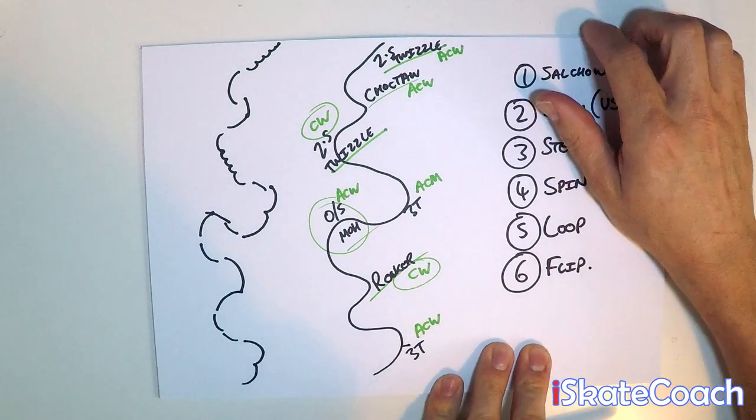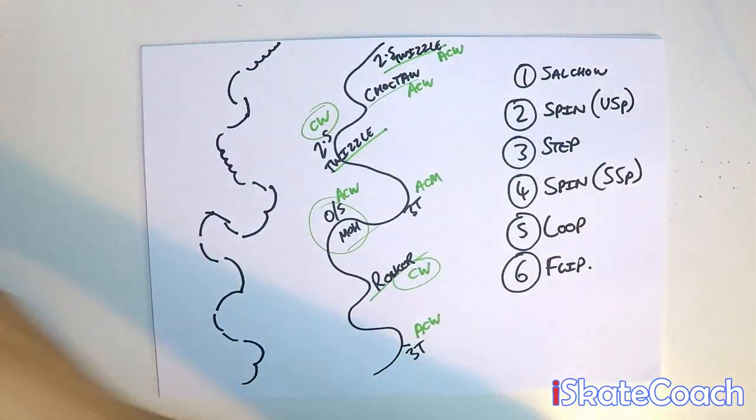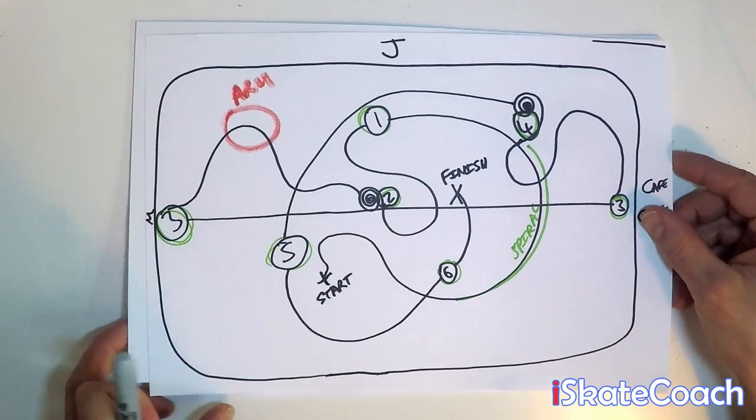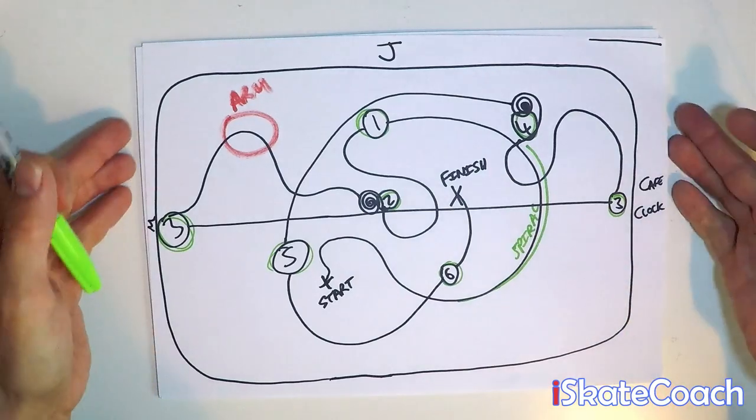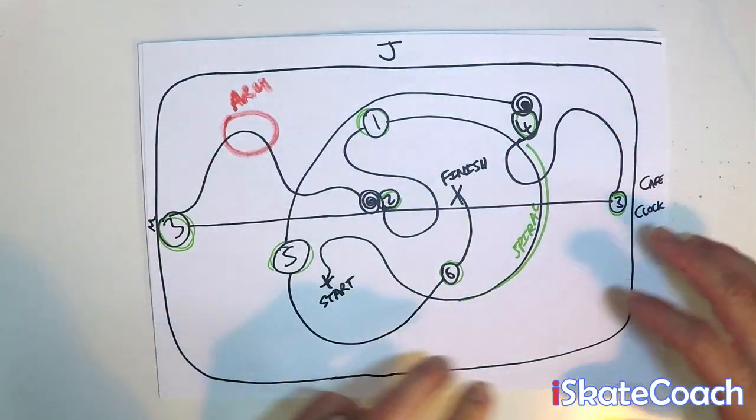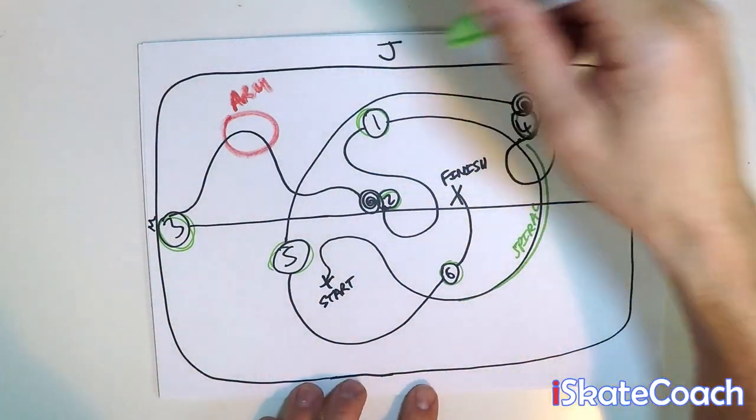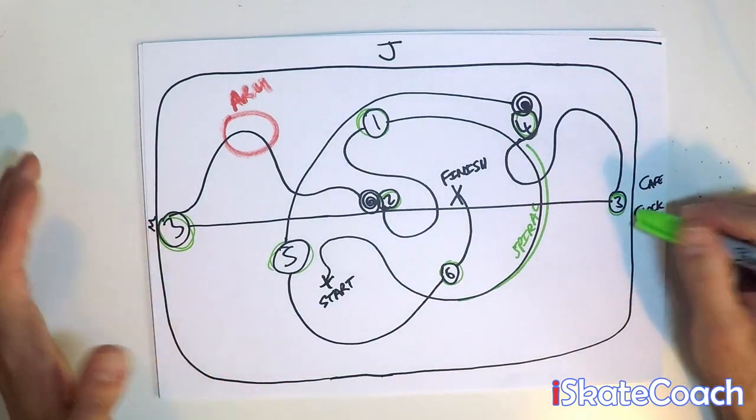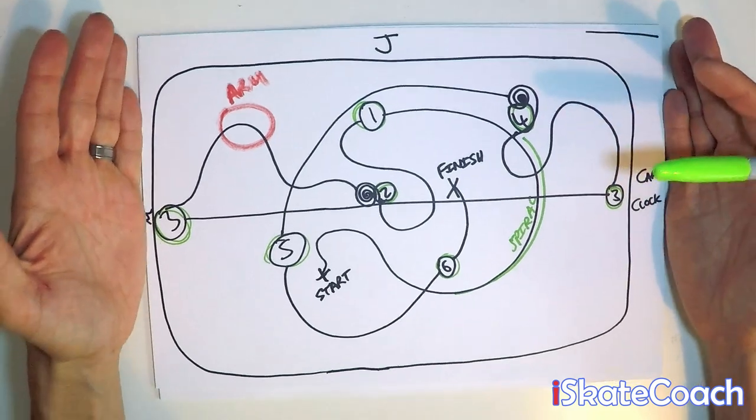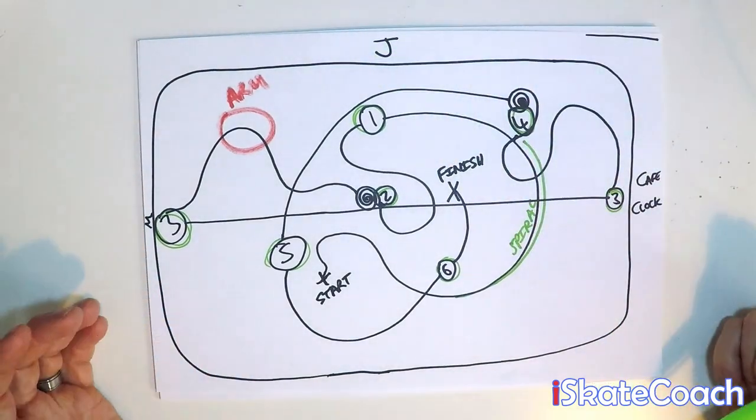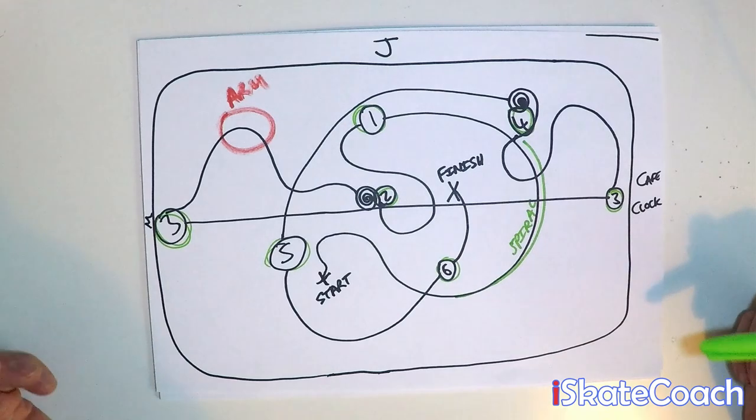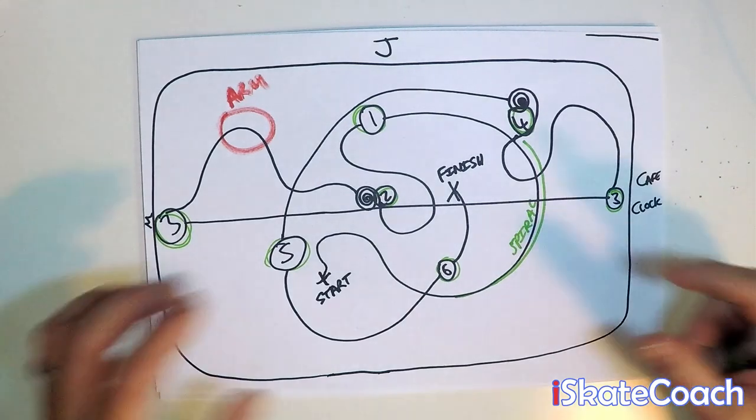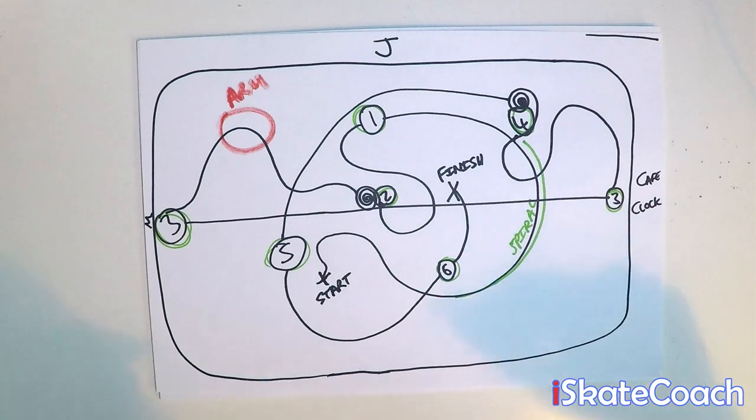That's it guys. That is how I would map out a program. Get creative, use different colors. If you're going to another rink just grab a bit of paper. Put on where you walk in, where their cafe and clock is, and whatever it is that reminds you which end it is, and where their judges are. Then map out your program again. It should be the same line on the ice. It's just good visually in your head to think about the surroundings of this new place that you're going to do your routine.